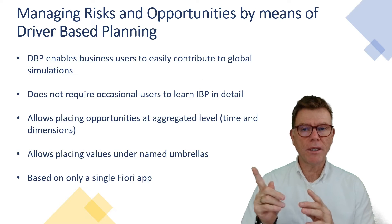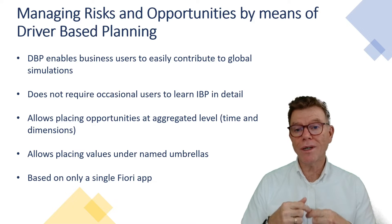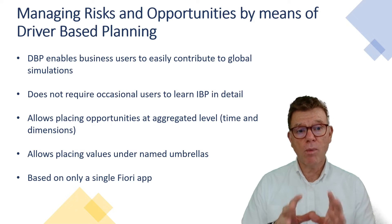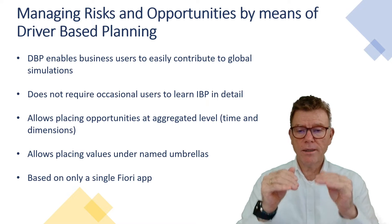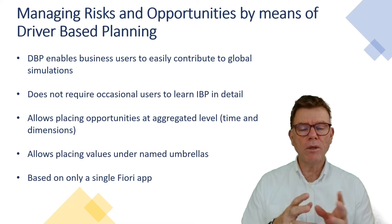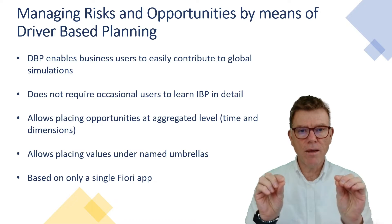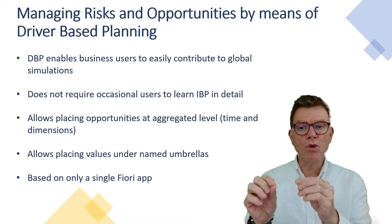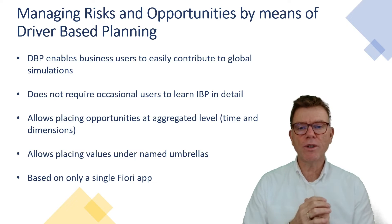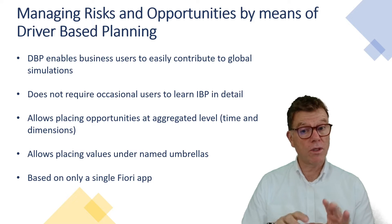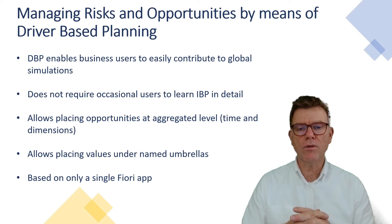A couple of hints about driver-based planning, here referred to as DBP. It enables business users to easily enter volumes and values contributing to a global simulation in the supply chain. It allows opportunities to be entered at a lower level, aggregated, or at a very high level like product family — we'll see that in the demo: product family and customer region by year, for instance. It also allows you to create what I call named umbrellas — a name to which you attach numbers, like a promotion for certain customers and a certain quantity, with no need to create many complex entries as we know in IBP. Very easy, based on a single application in Fiori. The results are published in key figures and other elements of IBP.